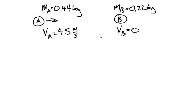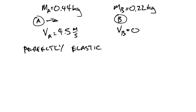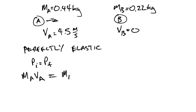If the collision is perfectly elastic, what will be the final velocity and direction of each ball? We have two equations we can draw upon. First, conservation of momentum: since B is not moving initially, MA·VA equals MA·VA prime plus MB·VB prime.